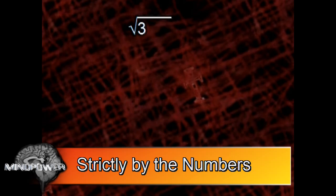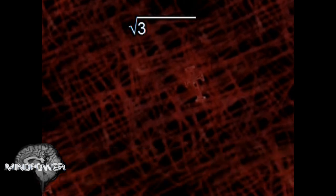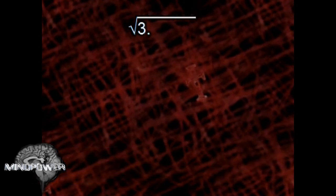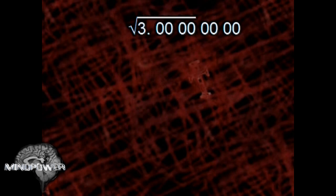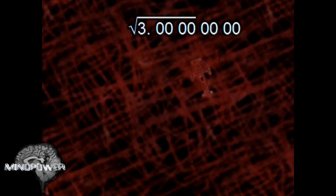For our example, we're going to start out with the number 3. We need the square root of 3. For our calculations, we're going to need that to be a lot longer. We're going to add a decimal point and a whole lot of zeros paired up and spaced apart. We need to find the largest number that can be multiplied against itself and still be less than or equal to 3. That would be 1.